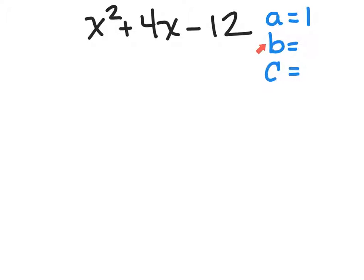Also, b is the number in front of the x. In this case, I have a positive 4, so b is 4. At last, we need the value of c. And c is the number that has no variable, in this case, negative 12.